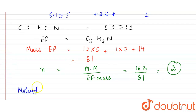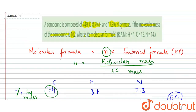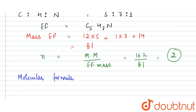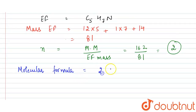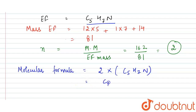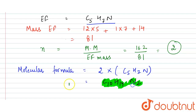The molecular formula = n × empirical formula = 2 × C5H7N = C10H14N2. This is our required answer.